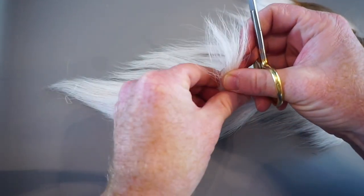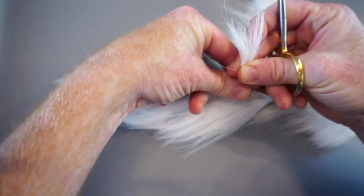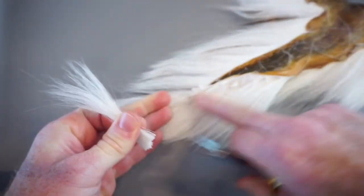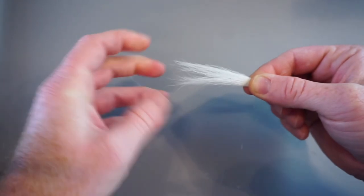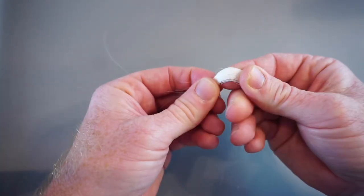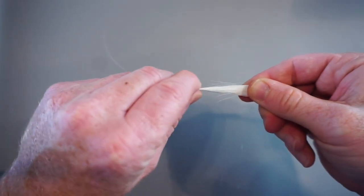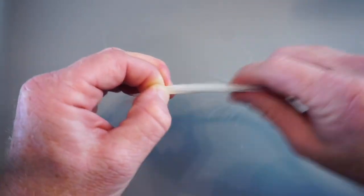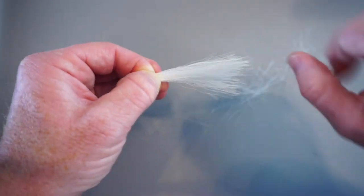So when getting your deer hair, you want a pretty big clump for the back of the fly here, and you want it towards the top. Now as you can notice, there's a lot of fur that is really short here. In order to get rid of that, you want to pinch up by the tip and then remove the bottom stuff.